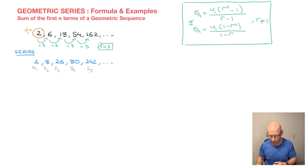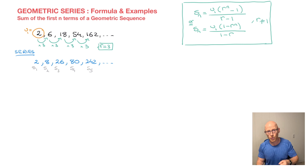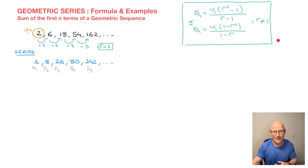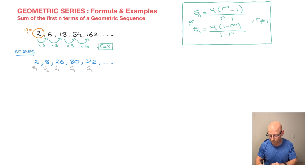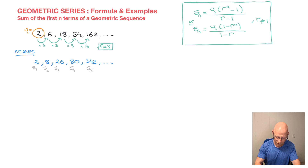With this formula, when we speak of calculating the sum of the first n terms of a geometric sequence, another way of saying that is we're looking at the nth term of the geometric series. So whether we say we need to find the fifth term of the geometric series, or we need to calculate the sum of the first five terms of the geometric sequence, it makes no difference — the formula we use is exactly the same.